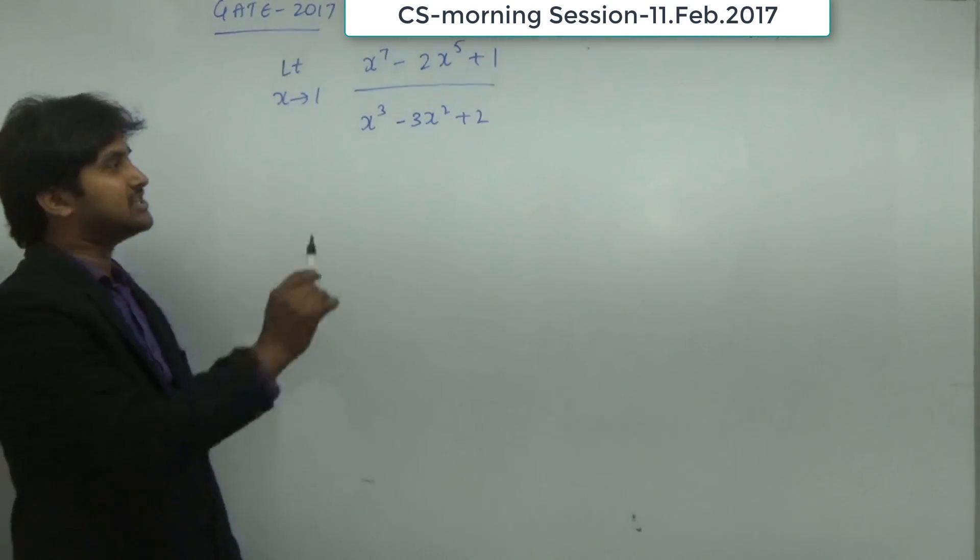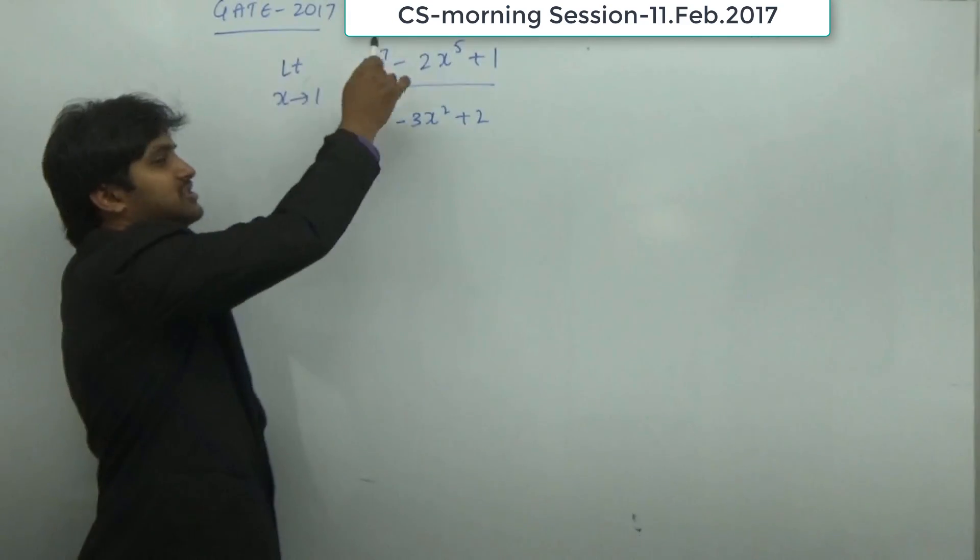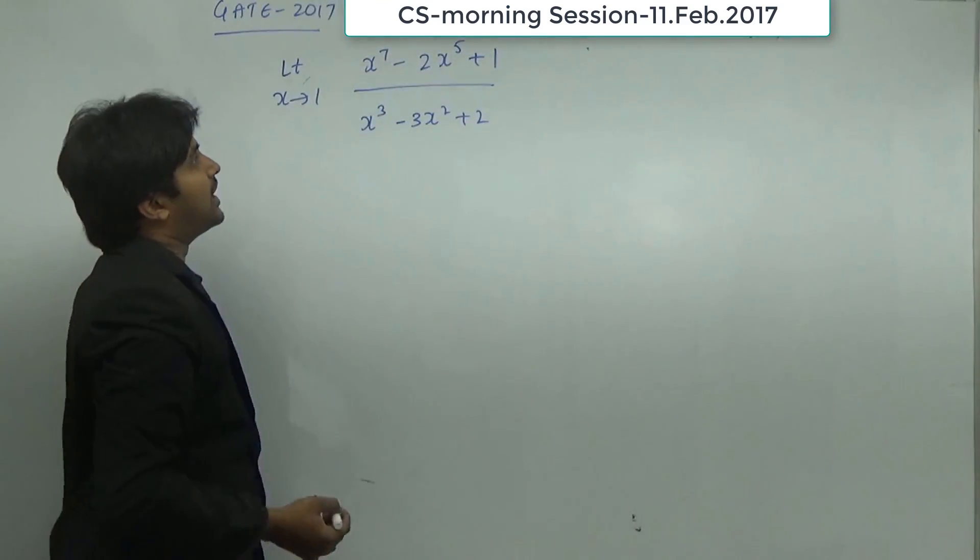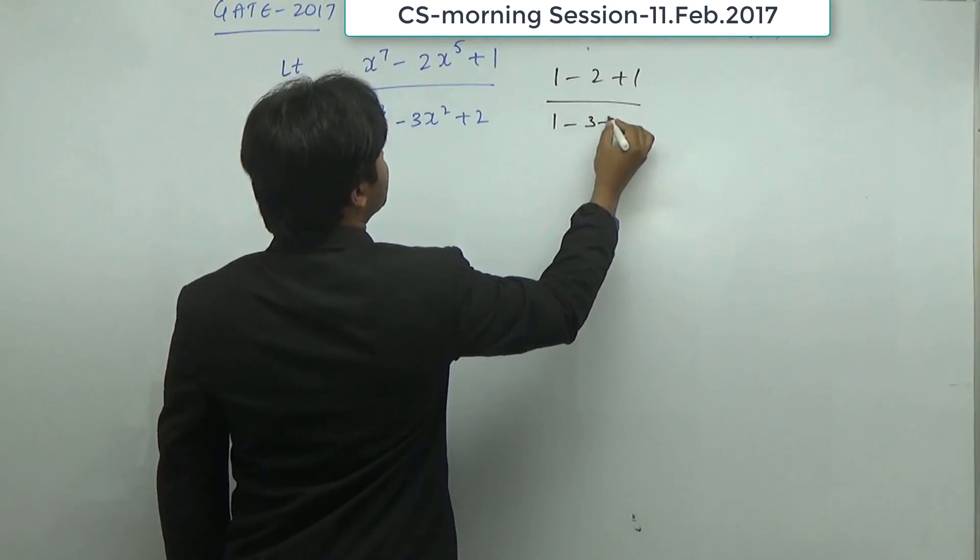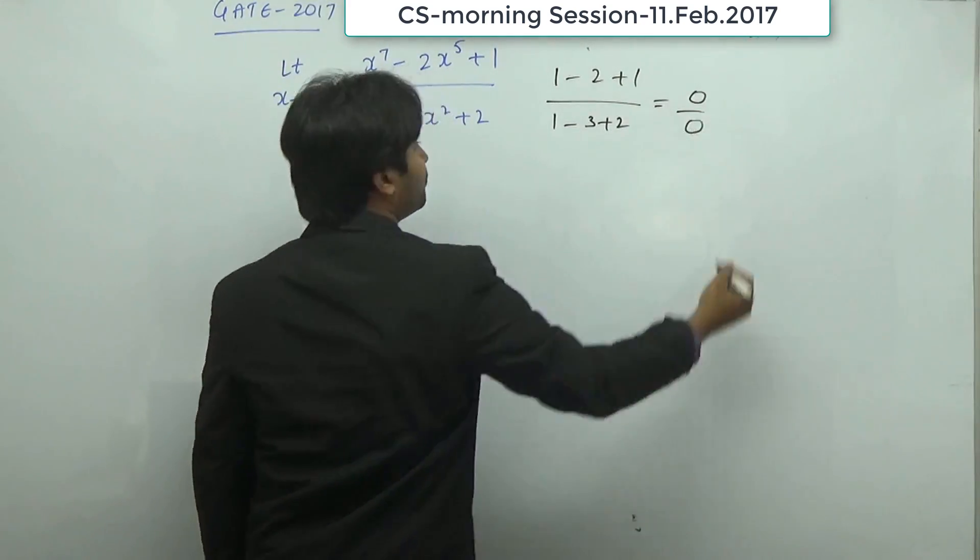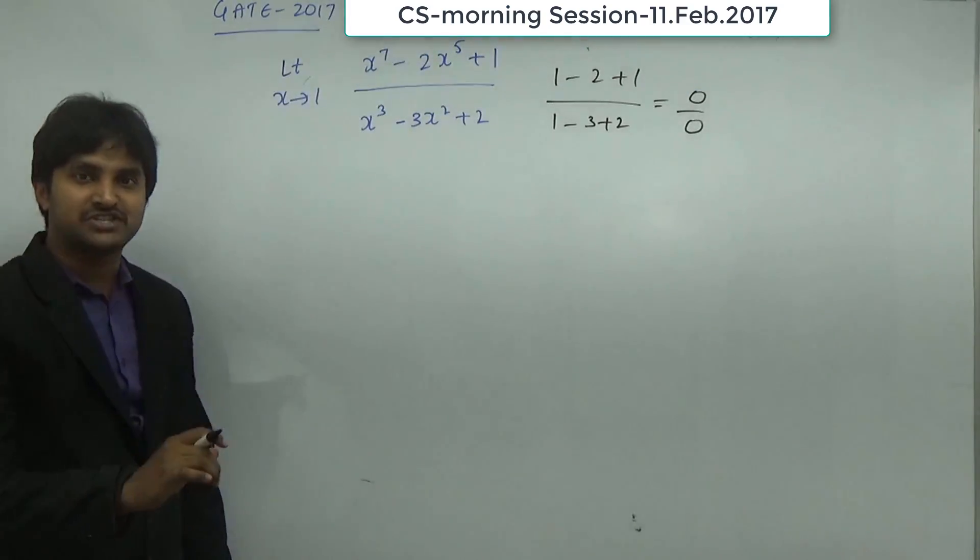First, what we're going to do is substitute whatever is given here. We're going to substitute in x. In that case, you're going to have 1 minus 2 plus 1 divided by 1 minus 3 plus 2. It is equal to 0 by 0. So whenever we have 0/0 or infinity by infinity, we're going to use a shortcut as L'Hospital's rule.